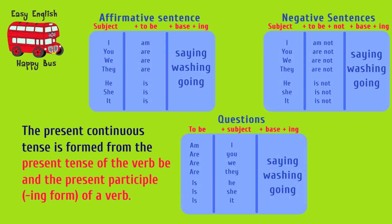Affirmative: I am saying. You are washing. They are going. He is saying. She is going. It is washing. Negative: I am not saying. You are not washing. They are not going. He is not saying. She is not going. It is not washing. Questions: Am I saying? Are you washing? Are they going? Is he saying? Is she going? Is it washing?